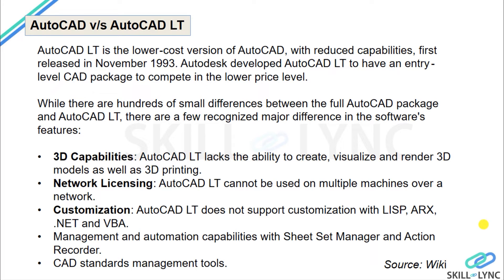AutoCAD LT was first released in November 1993 and is a low-priced option, though it has limitations. The main difference between AutoCAD full and AutoCAD LT is that LT lacks the ability to create, visualize, and render 3D models, as well as 3D printing capabilities. You must be cautious: if you take the LT version, you cannot do any 3D modeling, rendering, or 3D printing — for those you need the full version.